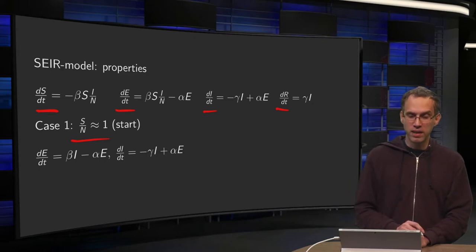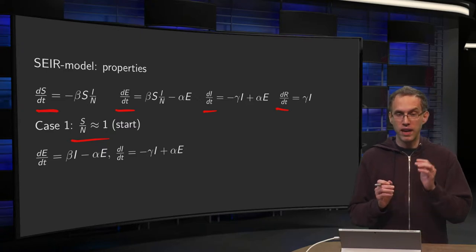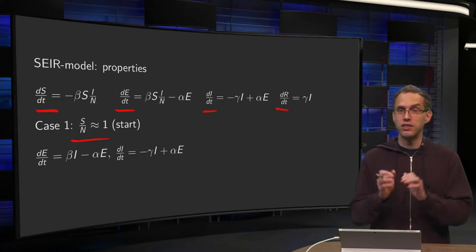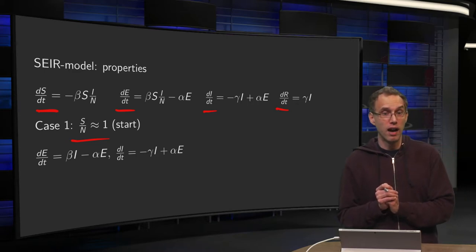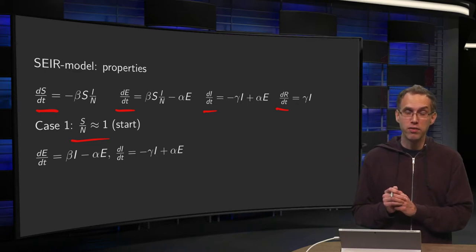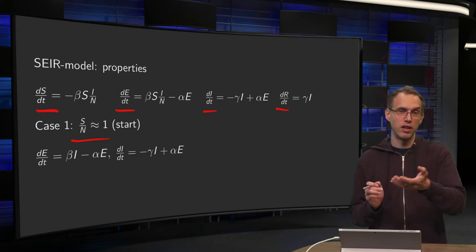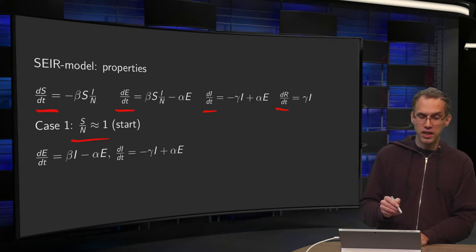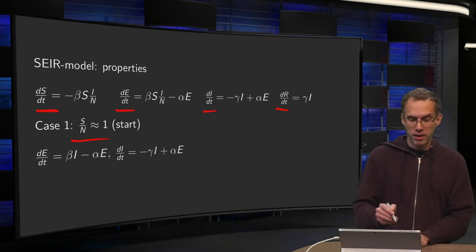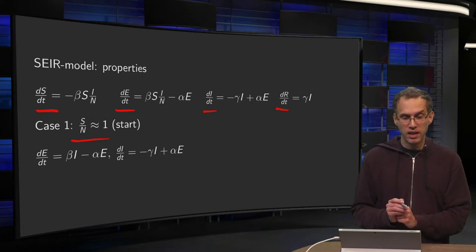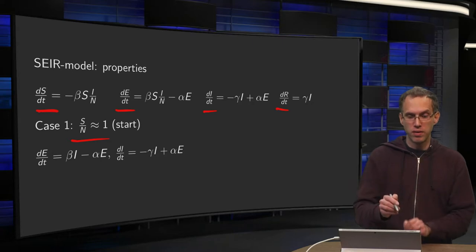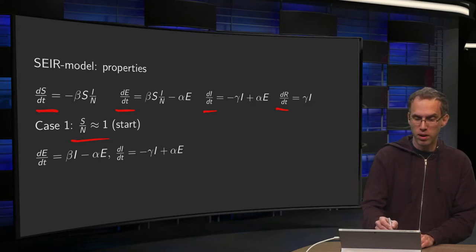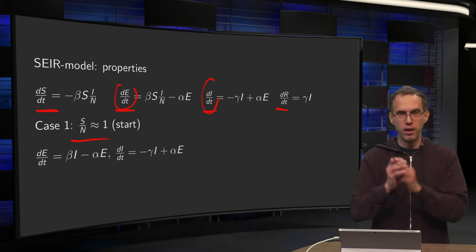Now in the remainder we always have S plus E plus I plus R equals N is constant so we only have to look at three of the differential equations then say R follows from that. And in this case we say well the S over N is approximately equal to 1 so we don't look at the susceptibles but only at the exposed and the infected. The susceptibles, almost everyone is still susceptible.